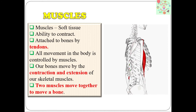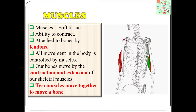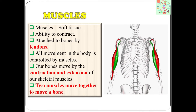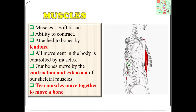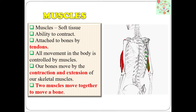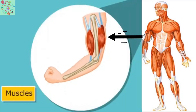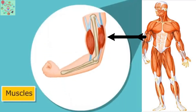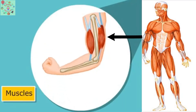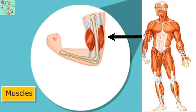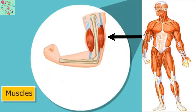Now let's see what muscles are. Muscles are soft tissue which have the ability to contract. They are attached to bones by tendons. All movement in the body is controlled by muscles. A bone moves by the contraction and extension of our skeletal muscles.